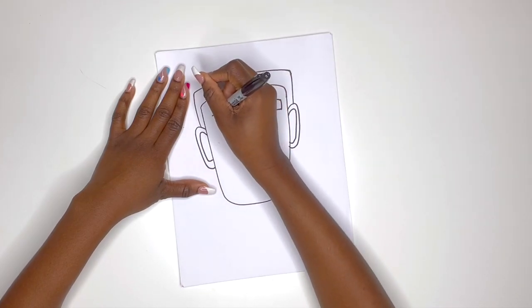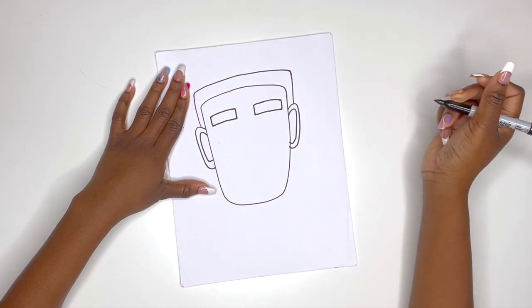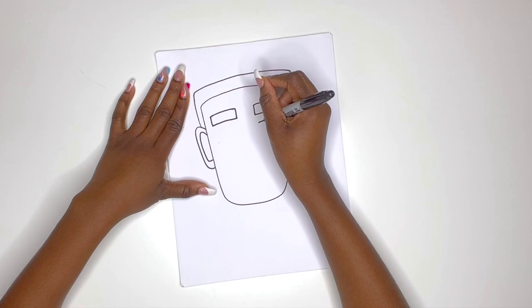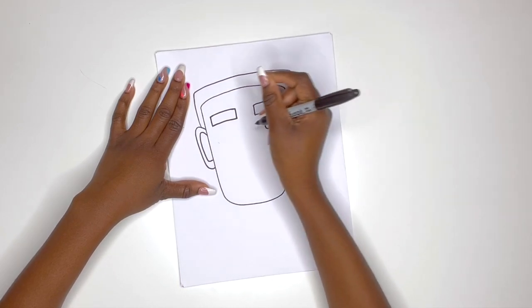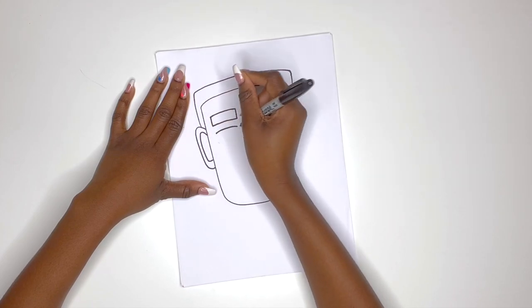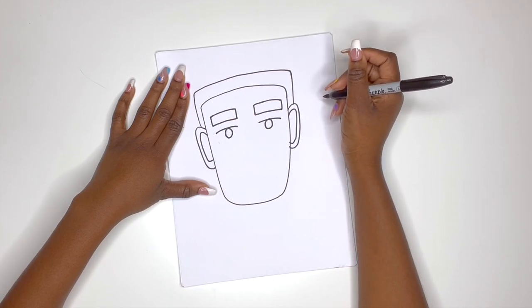out, doing rectangle shapes for his eyebrows. Now for his eyes, I'm going to start off with a line straight across and then a circle in the middle. I'm going to do the same thing to the other side. There